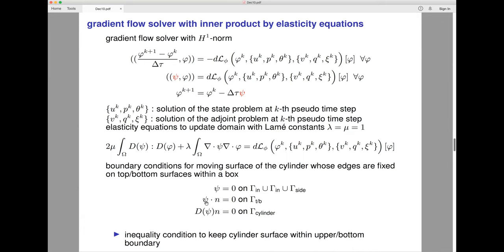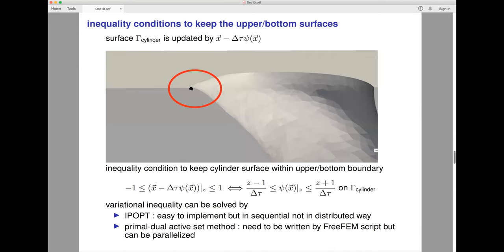I don't put any condition on the cylinder. But in the next figure, we can see if the shape changes, some part of the surface of the cylinder may exceed the top or bottom surface. This is a bad thing. I just want to change the shape of the surface, so I put some kind of constraint which means the deformation does not exceed the bottom and top surface. x minus delta tau ψ, where ψ is the deformation.